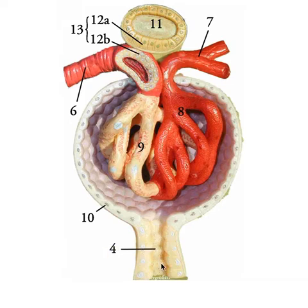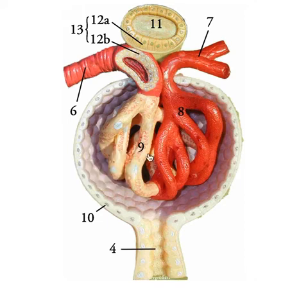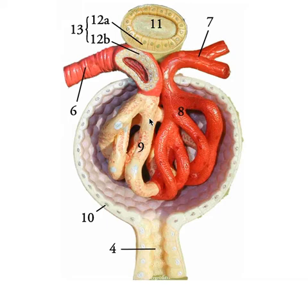Down here at number four is our proximal convoluted tubule — really large cells with a lot of microvilli. The model also shows the difference between each side of the glomerulus: one side shows the podocytes in place, and the other shows what a normal capillary bed would look like with the podocytes removed, then here it is with the podocytes on.